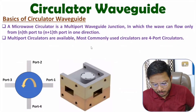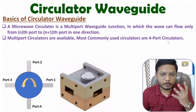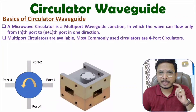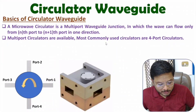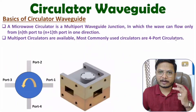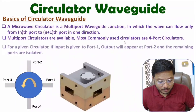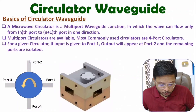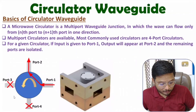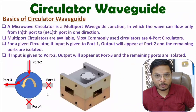Microwave circulators are available with multiple ports; the most commonly used are four-port circulators, as the majority of applications use them. In your laboratory microwave test bench you might have seen a three-port circulator. If you give input at port 1, output circulates towards port 2 and remaining ports are isolated. If input is at port 2, output circulates towards port 3 and remaining ports are isolated.